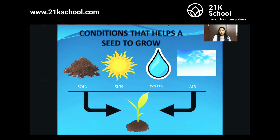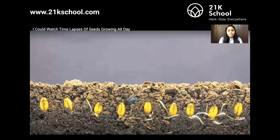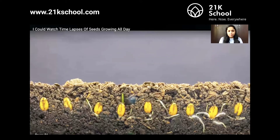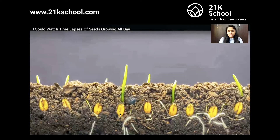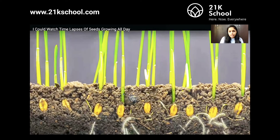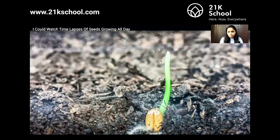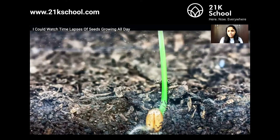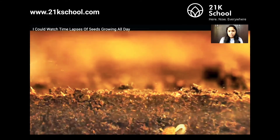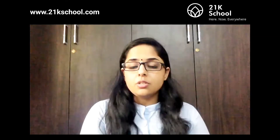Now let us watch a short video where you can see how germination actually happens. Here you can see how a seed germinates when it is sowed in soil — it gets a white color, which is the roots, and a green color shoot coming up. This is the stem which will later give leaves, fruits, and flowers. Isn't it nice to see germinating seeds?